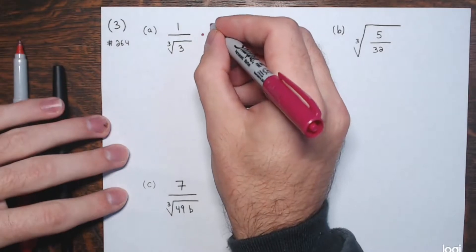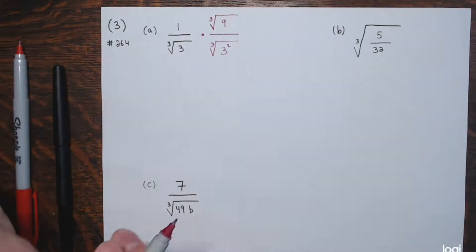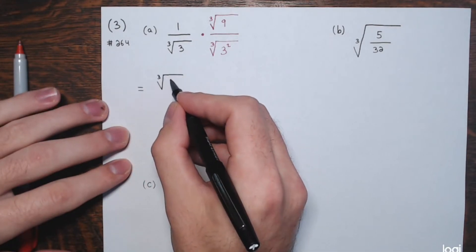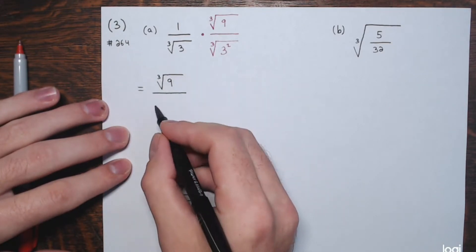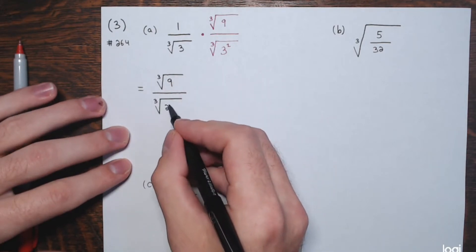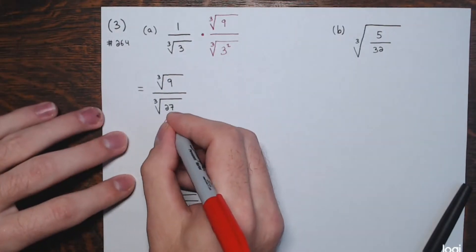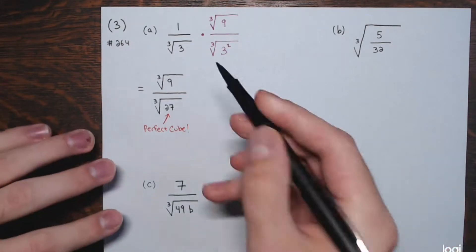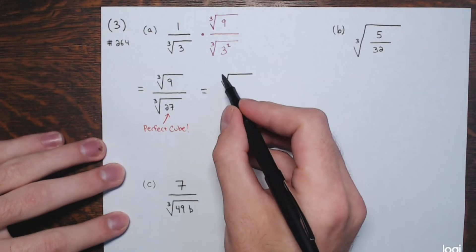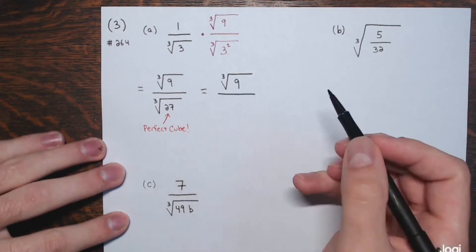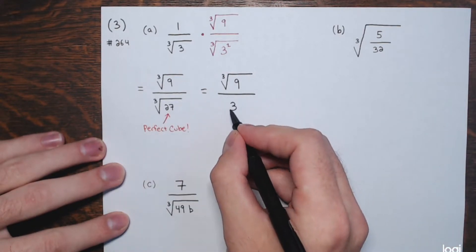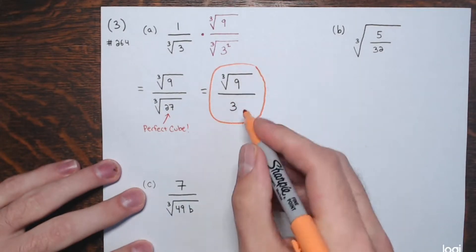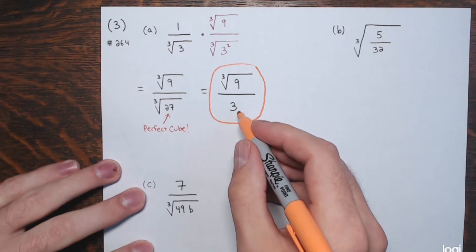Multiplying both numerator and denominator by the cube root of 9: the numerator becomes the cube root of 1 times the cube root of 9, which is just the cube root of 9. The denominator has the cube root of 3 cubed, or the cube root of 27, which equals 3. The cube root of 9 can't simplify further since 9 has no perfect-cube factors other than 1. So the result is the cube root of 9 divided by 3 — the denominator is just 3 with no radical.